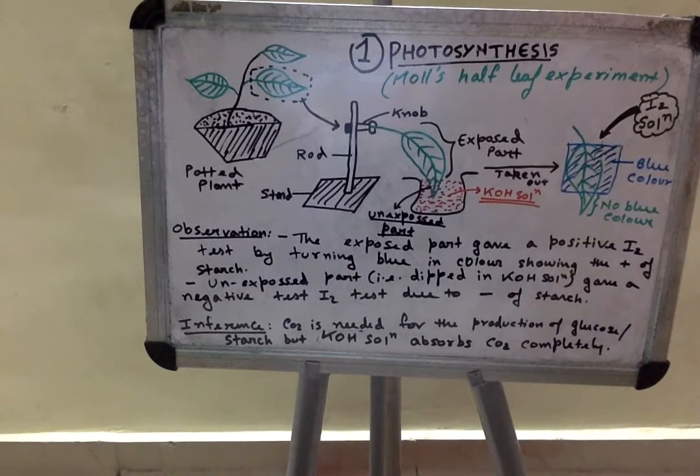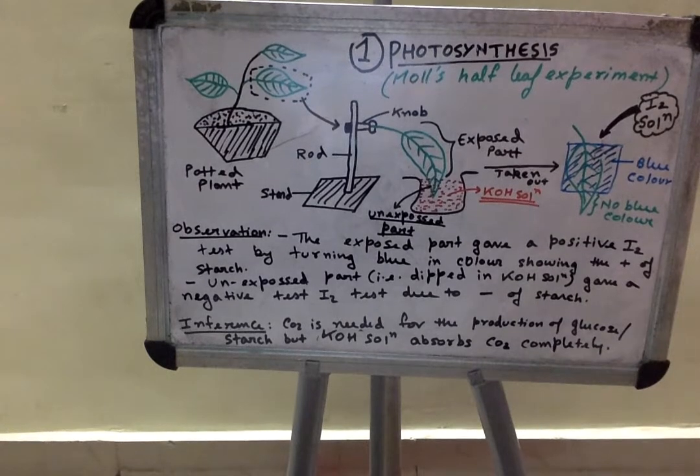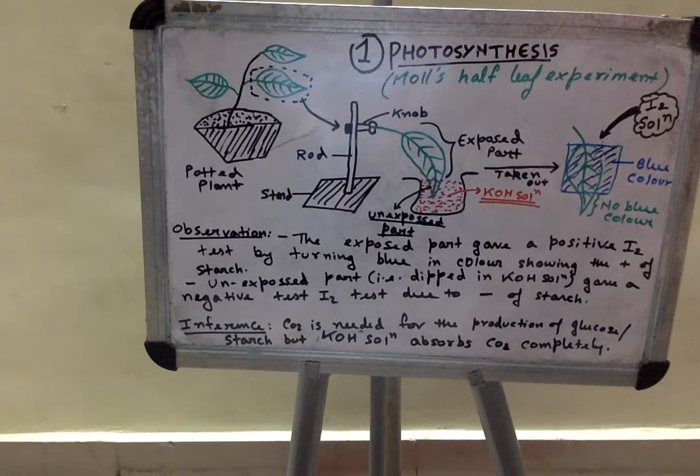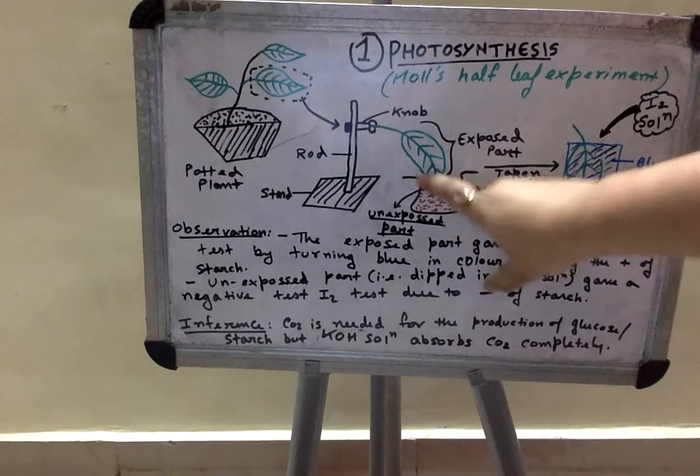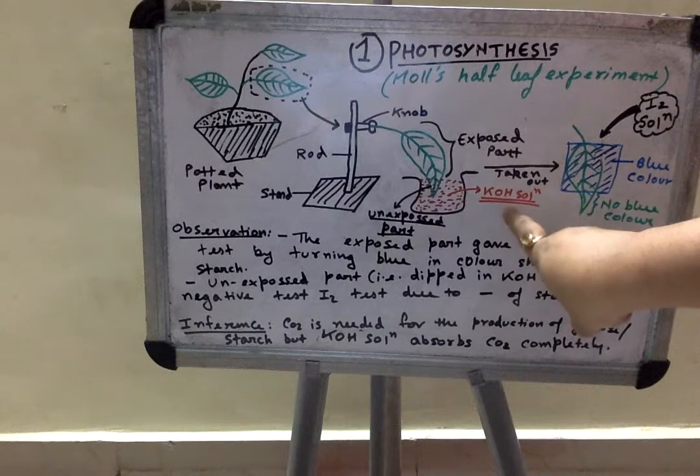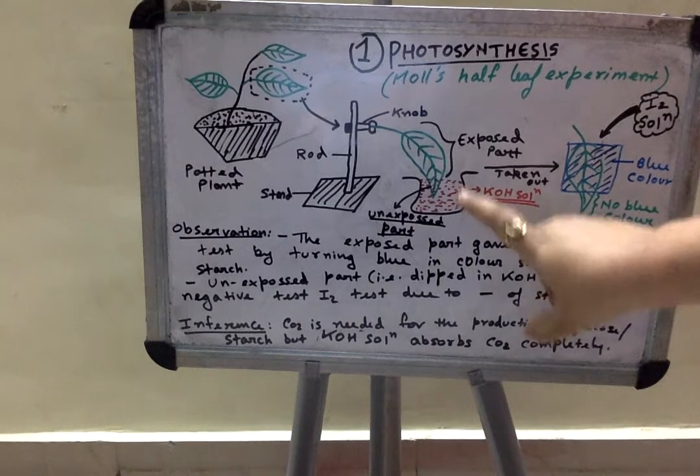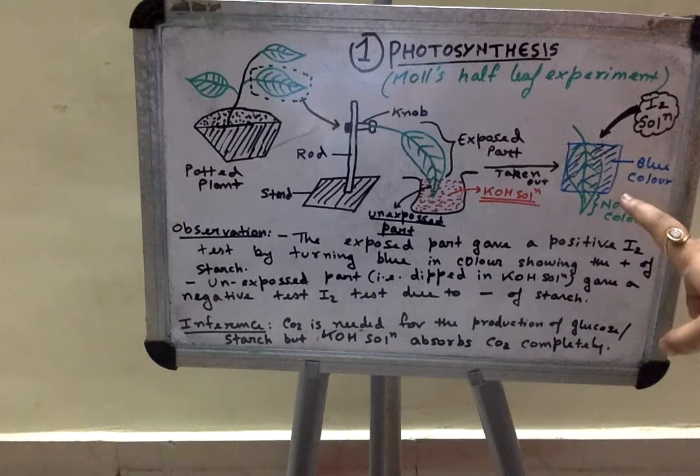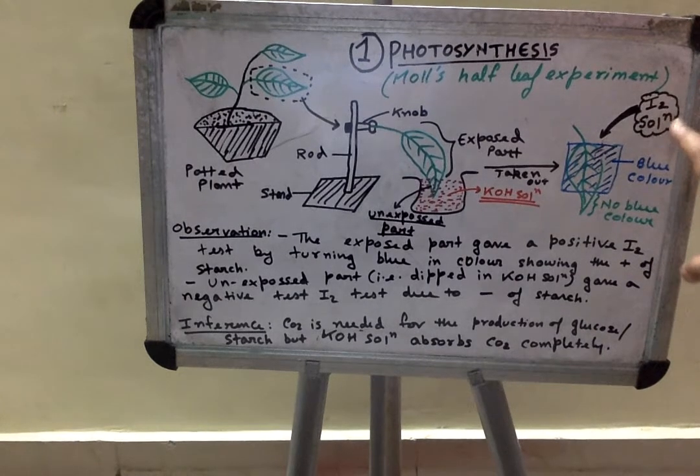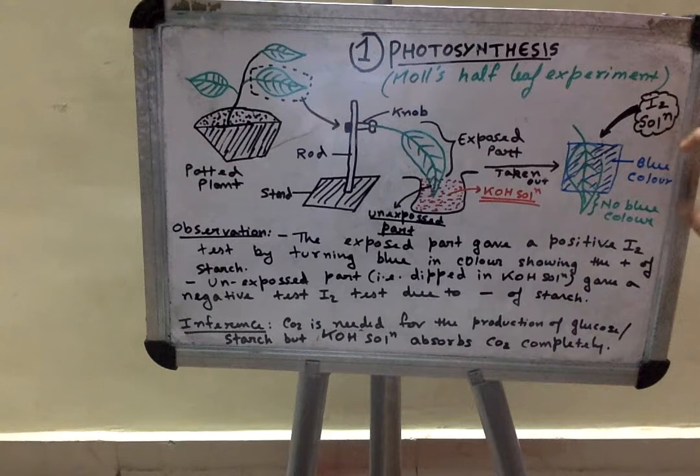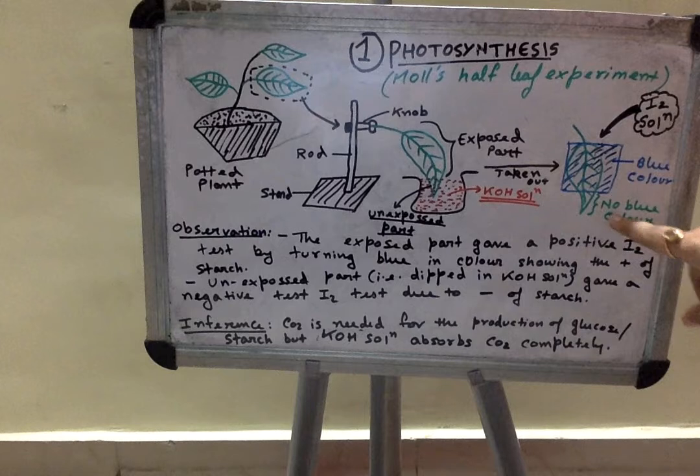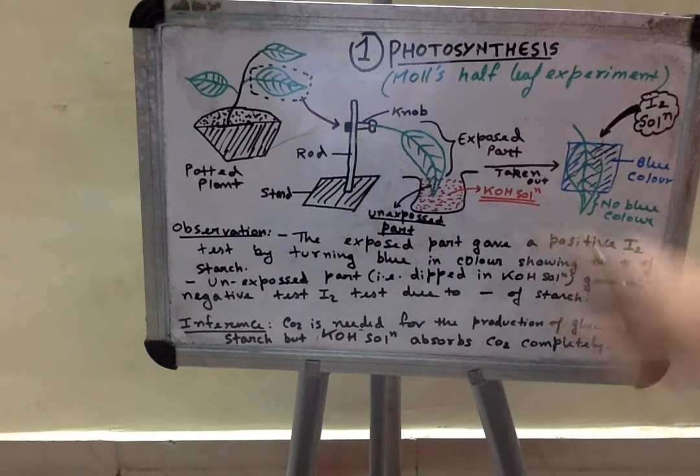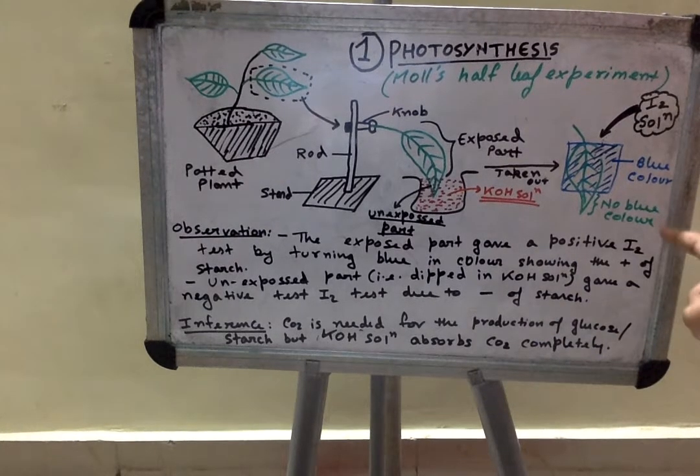This exposed part is getting carbon dioxide, oxygen, nitrogen, all types of gases. So this is exposed to normal atmospheric condition, and this part is dipped into the solution of KOH. Later on, if you examine this whole leaf by treating it with iodine solution, then the exposed part will give blue color, but the unexposed part which was dipped into KOH solution gave no color change or no blue color.